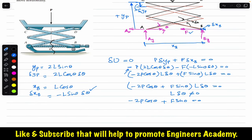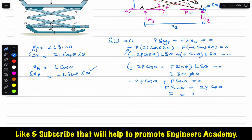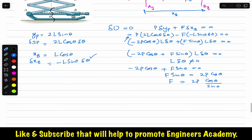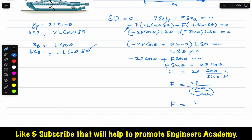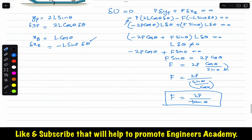Since we want to find screw force F, we write F sine theta equals 2P cosine theta, therefore F equals 2P cosine theta divided by sine theta. This simplifies to F equals 2P divided by tan theta. So in terms of position angle theta, the screw force is F = 2P / tan(theta).